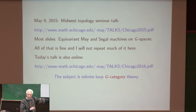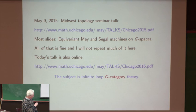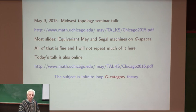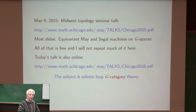This talk is also online on my webpage. The subject is infinite loop G-category theory, starting from where Bertrand ended. You want to know how to process information given in terms of G-categories and produce G-spectra out of that information, in such a way that all good multiplicative properties that you can imagine hold.